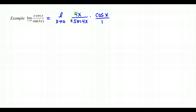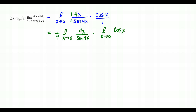Since the 4 is introduced in the denominator, the constant pulled to the front is 1/4 — not 4. This gives (1/4) times the limit of 4x/sin(4x) times the limit of cos(x). The first limit equals 1 by the special trig limit; for the second, direct substitution gives cos(0) = 1. So the final answer is 1/4.